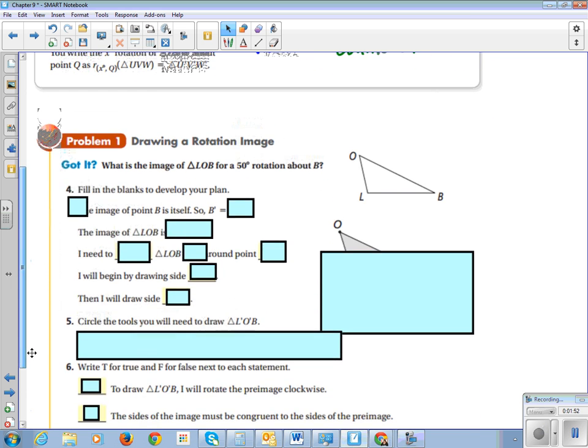Alright, so let's look at our problem, now that we have all that beautiful information. So the image of point B is itself, so we're rotating about B, so B gets to stay the same.